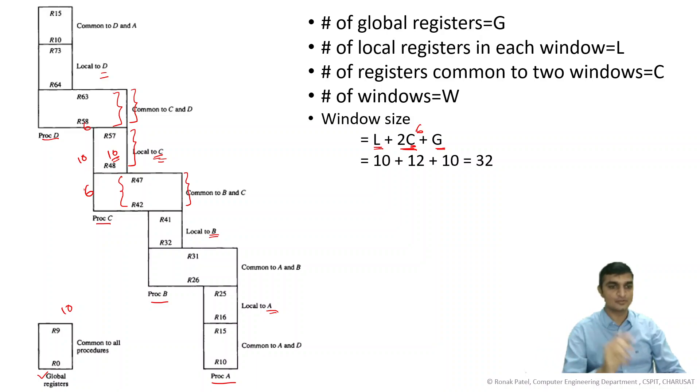So assume for process A, for process A, these 32 registers are allocated. Now there is another call B. What happens? Another register window will be activated, another register will be activated - 32.